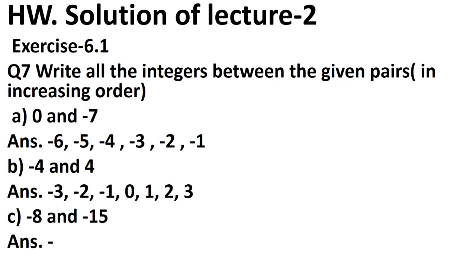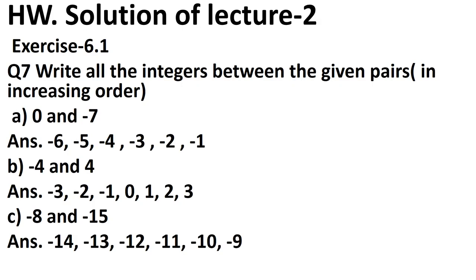Write in increasing order, meaning smallest first. Minus 14 is the smallest — the greater the negative, the smaller its value. So: minus 14, minus 13, minus 12, minus 11, minus 10, minus 9.